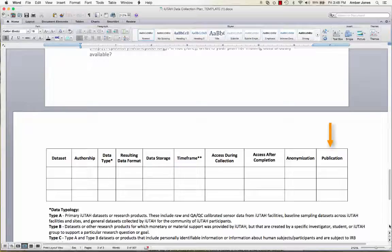Publication. Finally, this last field requests a yes or no as to whether the data will be shared or published via the iUtah publication system. It is rare that data would not, but if so, you need to provide a plan for making these data broadly available.